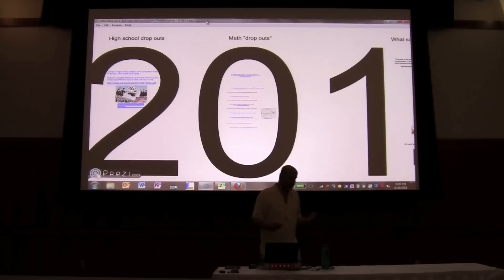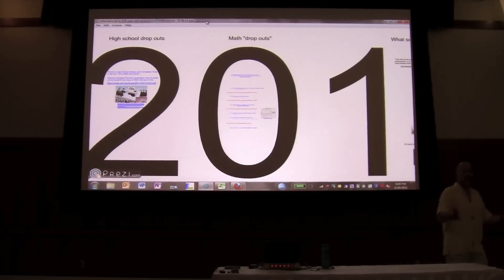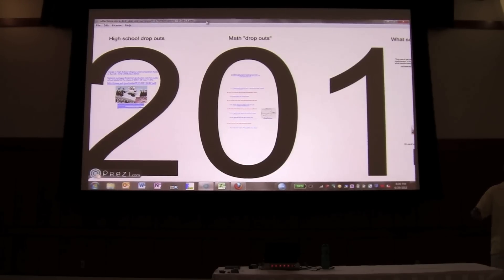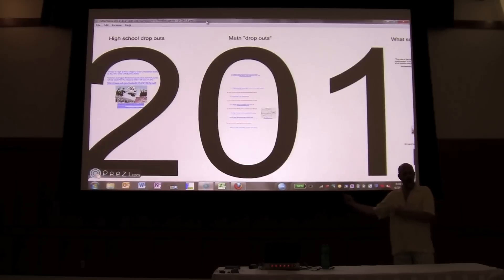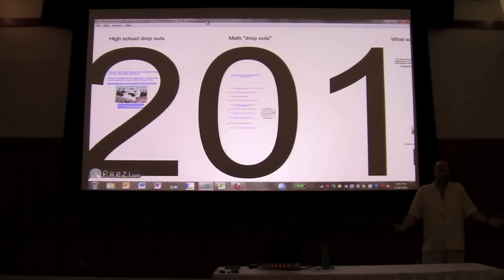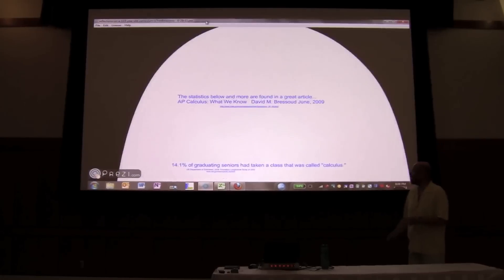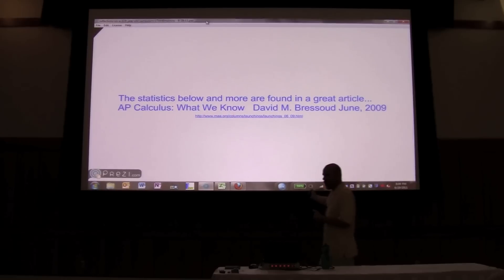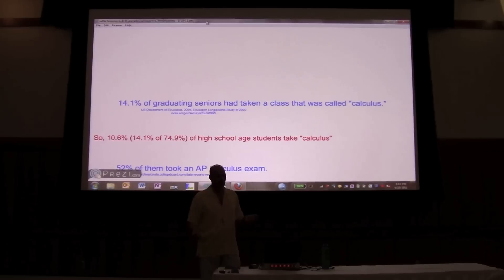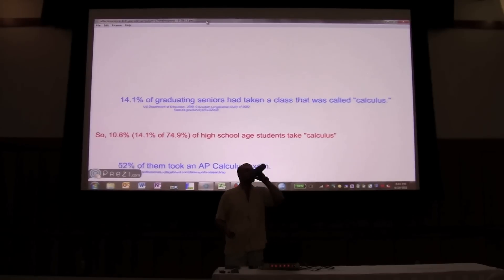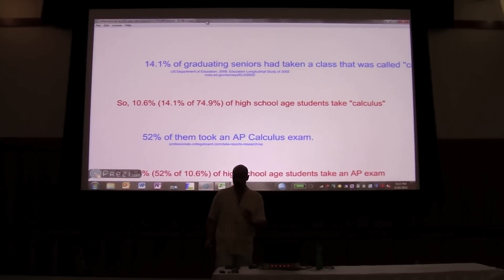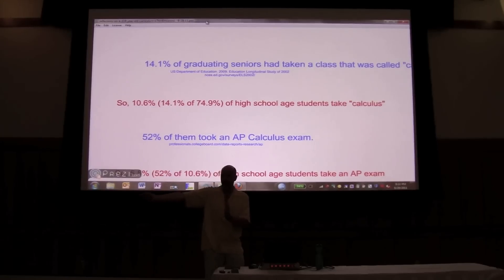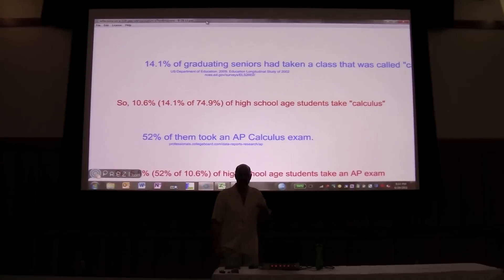The second thing I'd like to look at is what's called math dropouts. I don't think I'm going out on a limb here saying that the traditional curriculum in the United States is designed to prepare students to take calculus. Pre-algebra, geometry, algebra 1, algebra 2, pre-calculus is just really four years of pre-calculus. So I've been interested for quite some while and looked up the numbers to say, well, what percentage of kids take calculus and pass it? So here are the numbers that I came up with. About 14% of graduating seniors have taken some course called calculus. Now remember that only three quarters, we're only reaching three quarters, because 25% of the population doesn't even graduate from high school. So that's only about 10.6% of high school age students take calculus.